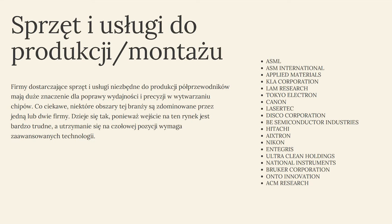Zaczynamy od sprzętu i usług do produkcji i montażu półprzewodników. Ten segment jest stosunkowo prosty do inwestycji. Sprzęt do produkcji i montażu jest zdominowany przez kilka firm. W segmencie litografii tak naprawdę nie ma konkurencji – jest jedna firma, którą Państwo znacie, i to jest ASML. Ten segment zajmuje się dostarczaniem sprzętu, który służy do produkcji lub poprawy wydajności w ramach procesu produkcji.